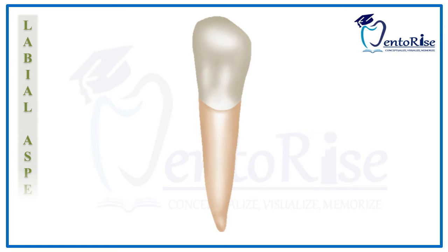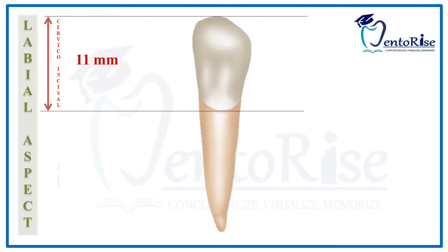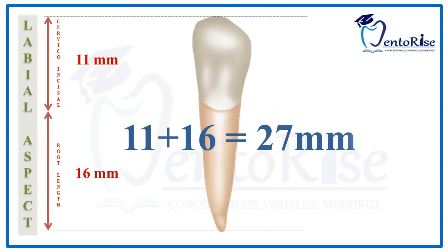Starting with the labial aspect first, considering the dimensions. The permanent mandibular canine has 1 cusp. Measuring the cervico-incisal dimension from the cusp tip to the lowest point on the cervical line, the measurement comes out to be 11 mm. The root length, measured from the lowest point on the cervical line to the root apex, is 16 mm. The total length of this tooth is therefore 11 mm plus 16 mm, that is 27 mm.